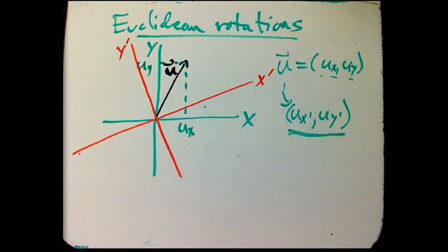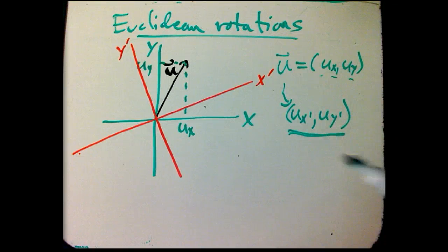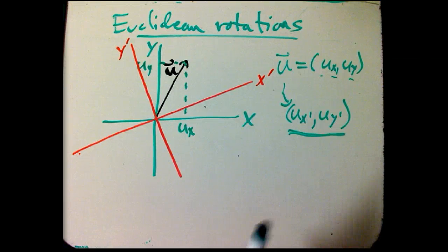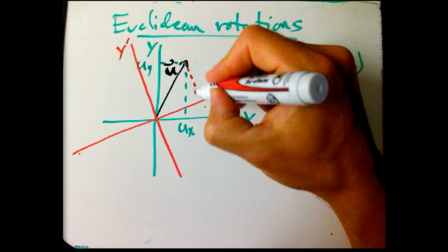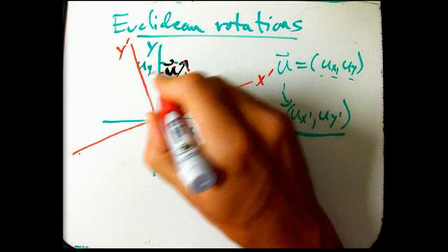And that's going to give us the matrix that expresses rotations in Euclidean geometry. So, what that just requires is we're just going to be projecting this vector U onto this direction, and then onto this direction. We know how to do that.